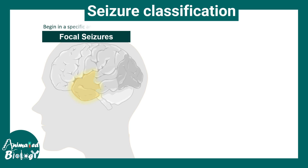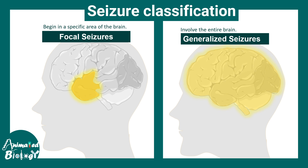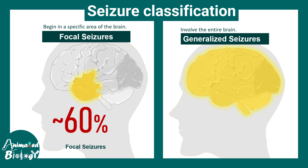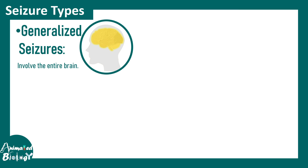There could be focal seizures and there could be generalized seizures. Focal seizures start in a specific area of the brain, a specific lobe, whereas generalized seizures involve the entire brain. Generalized seizures are not as common as focal seizures. In the context of epilepsy, 60% of seizures are focal, starting from a specific region in the brain, while generalized seizures contribute 40% of epilepsy cases.